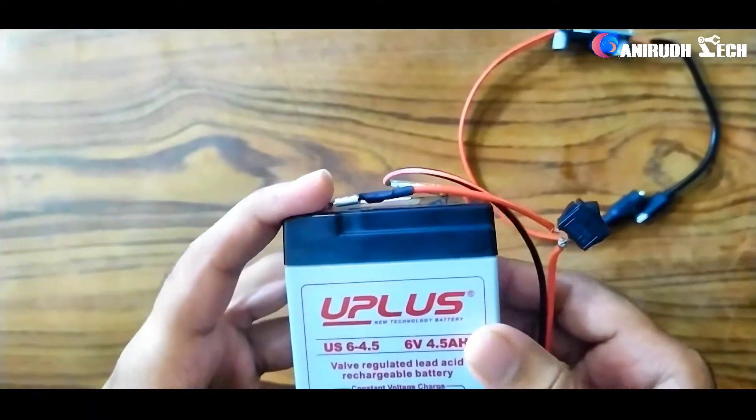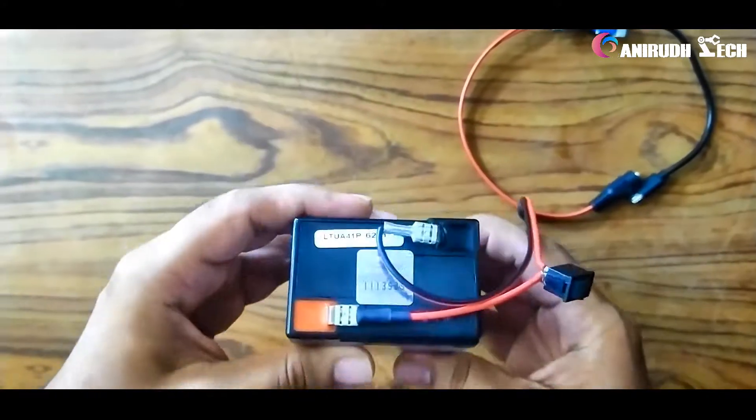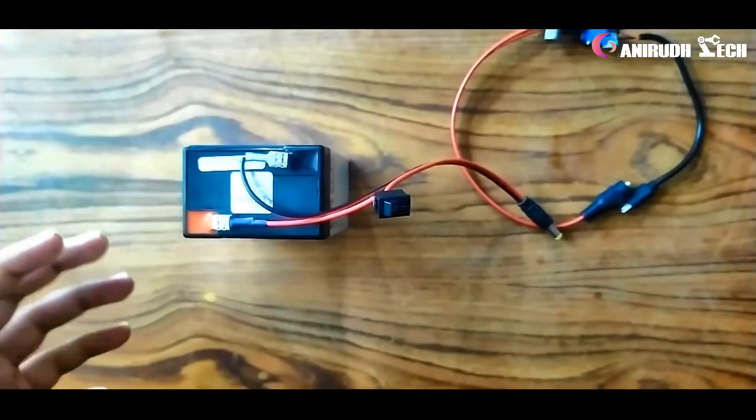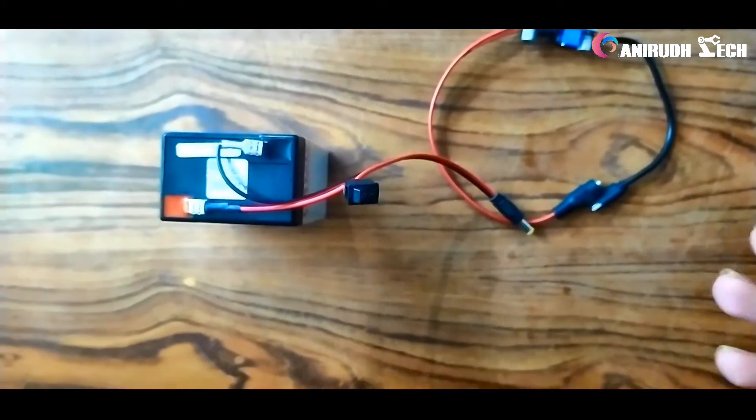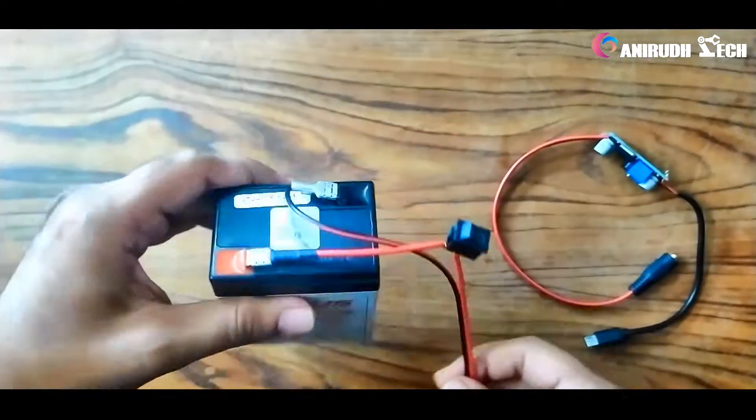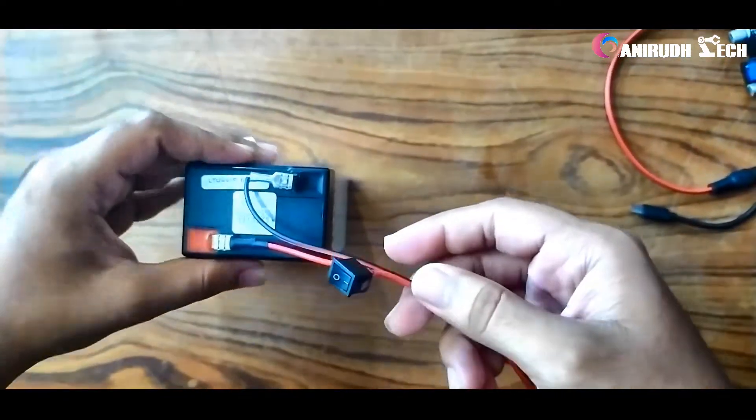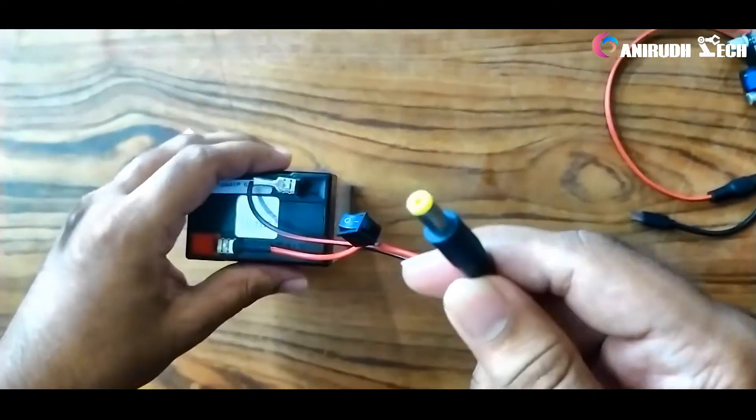Hello friends, here I am using my 6 volt 4.5 AH battery as my power bank for charging mobile phones and also other devices and to power my circuits. This is my battery. I have added a DC male jack and also a switch.